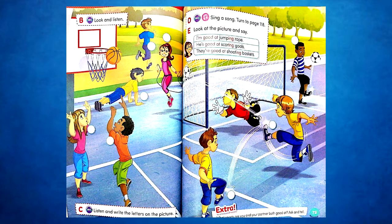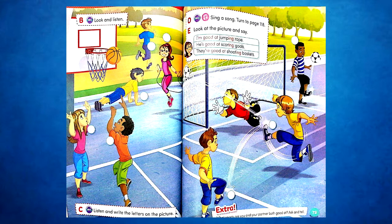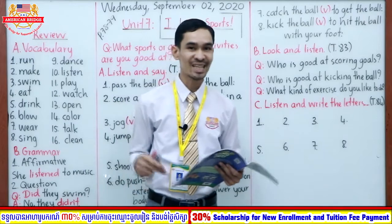Part B — Look and Listen: Hi everyone, I'm at sports camp. It's a lot of fun. I'm on the soccer field practicing. Darren passes the ball to me and I just scored a goal — I'm good at scoring goals. My friend Jamal is kicking the ball; he's good at kicking the ball. Steve is shooting baskets on the basketball court. Rachel is helping him by catching the ball when it goes through the hoop. My friend Rob loves to jog — can you see him jogging? What kind of exercise do you like to do?